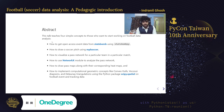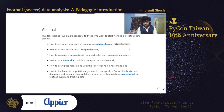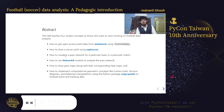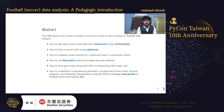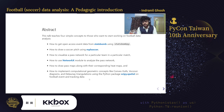This is the abstract. I'm going to cover: how to get open access event data from StatsBomb using the StatsBombPy package; how to draw a soccer pitch using the mplsoccer package in Python; how to visualize a pass network for a particular team in a particular match; how to use the NetworkX module to analyze pass networks using complex network analysis; how to draw pass maps with corresponding heat maps; and finally, how to implement computational geometric concepts like convex hulls, Voronoi diagrams, and Delaunay triangulations using scipy.spatial on football event and tracking data.